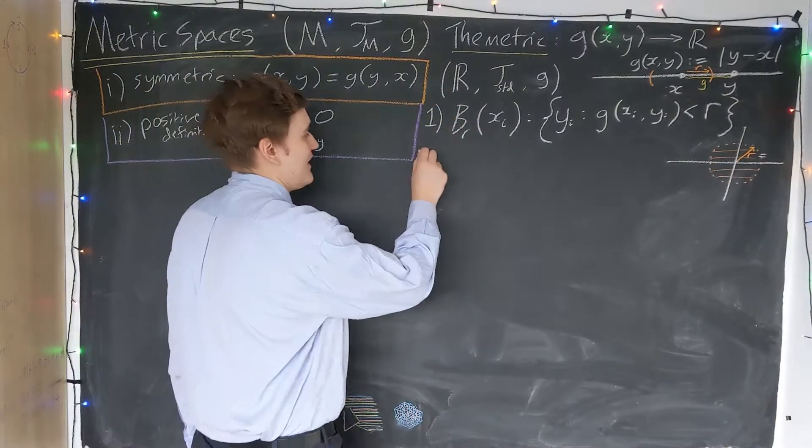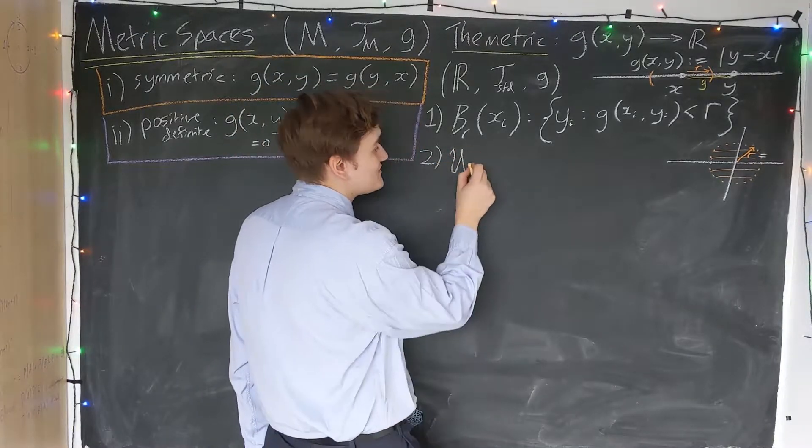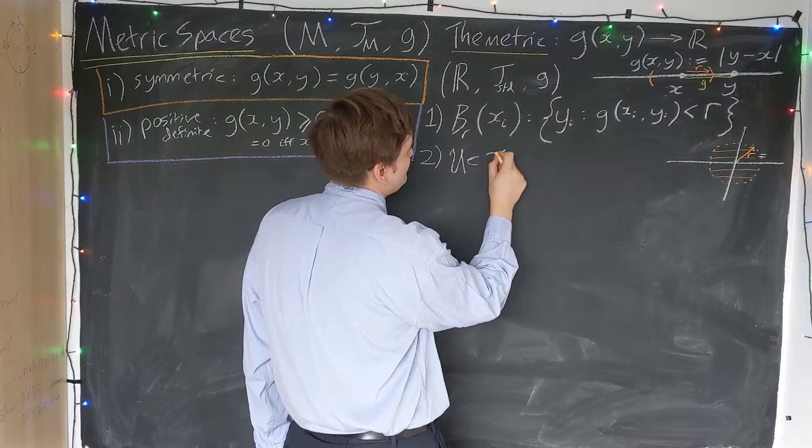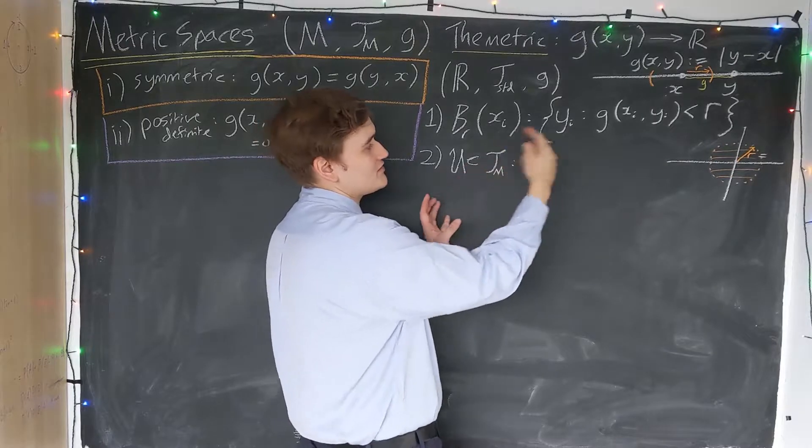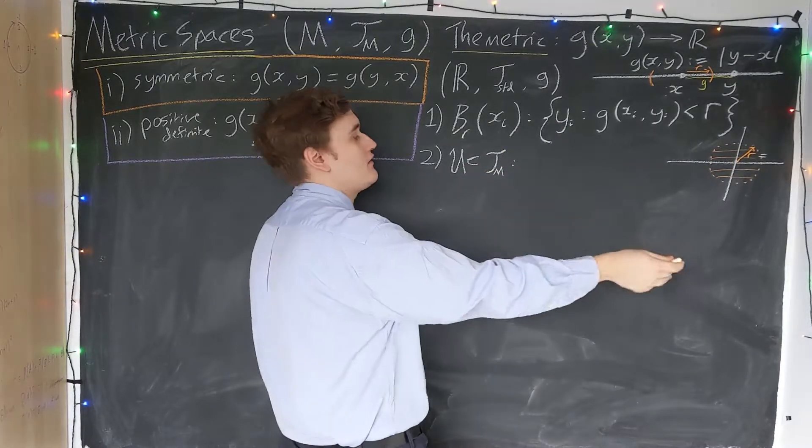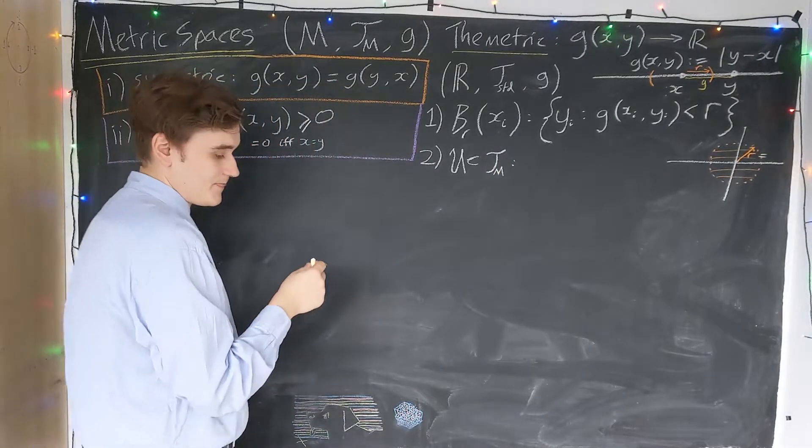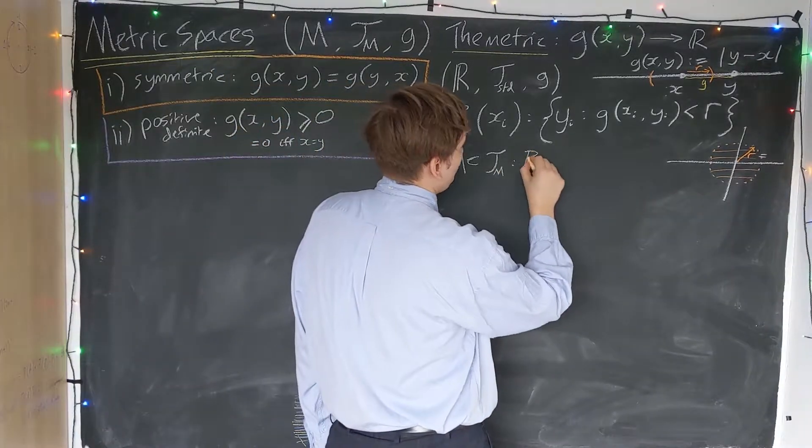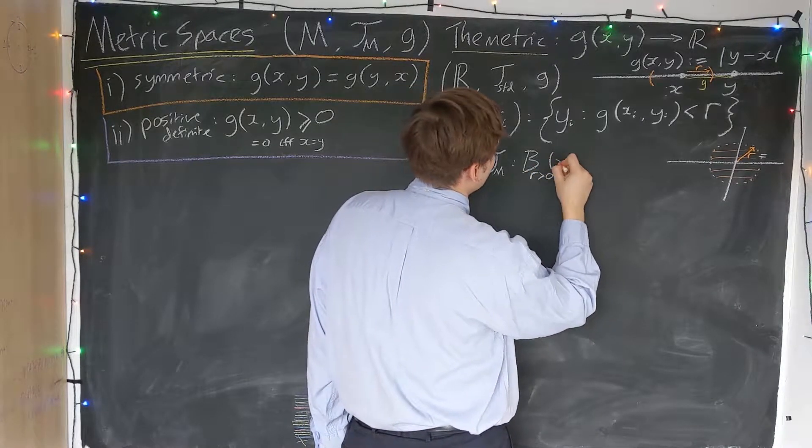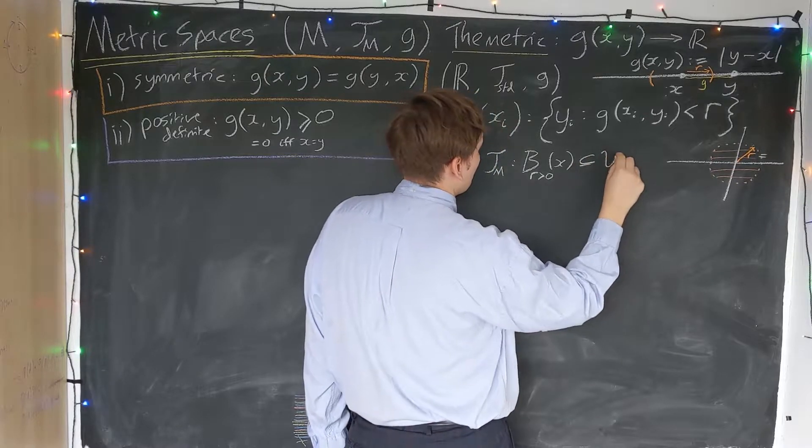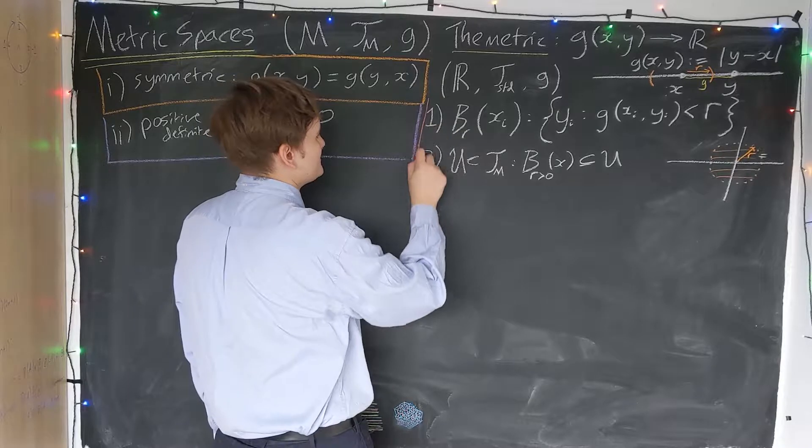So then, just as we had before, we can say that any set is in the topology if, for every point in the set, we can construct a ball of a non-zero radius around that point. I won't bother writing it down. We did it in the last video. I will just write it down. If the ball of some radius greater than zero around the point lies entirely within the open set. So this is standard topology.